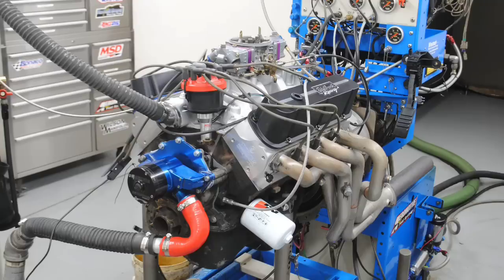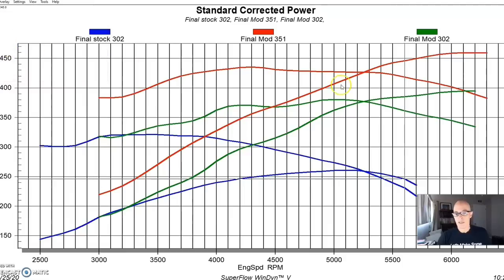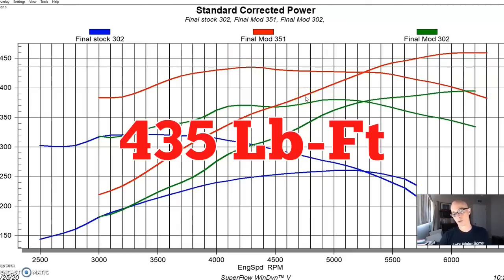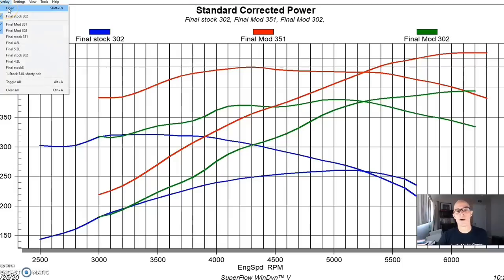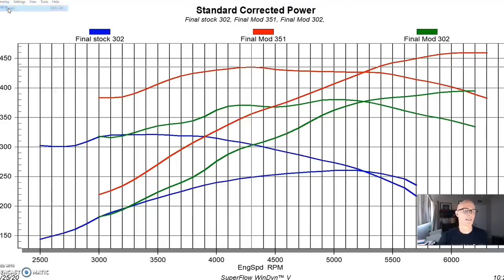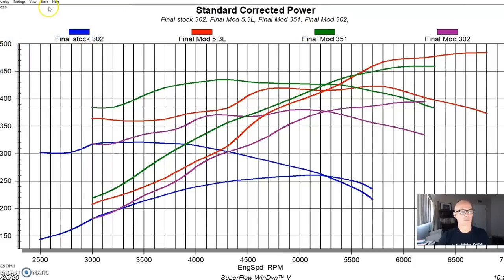Here's a modified 351, again stock bottom end but with heads, cam, and intake. This was an Edelbrock package that they sell - a complete heads, cam, and intake package from Edelbrock for the 351. As we expect, just as it did when it was stock, it made more power and torque than the 302. The modified 351 produced 460 horsepower and 435 foot-pounds of torque.